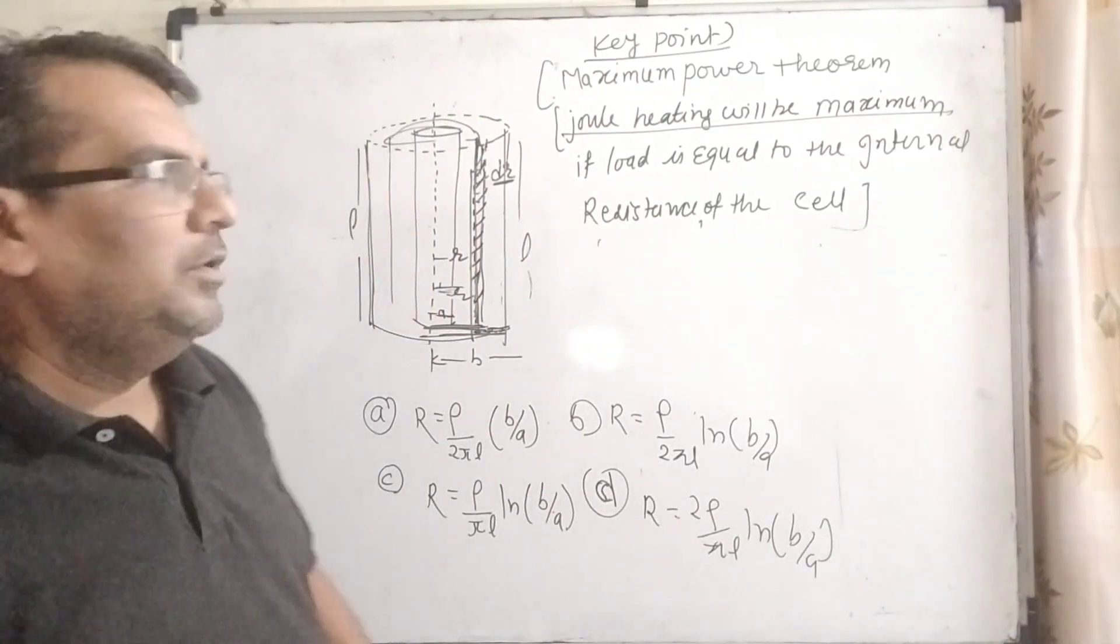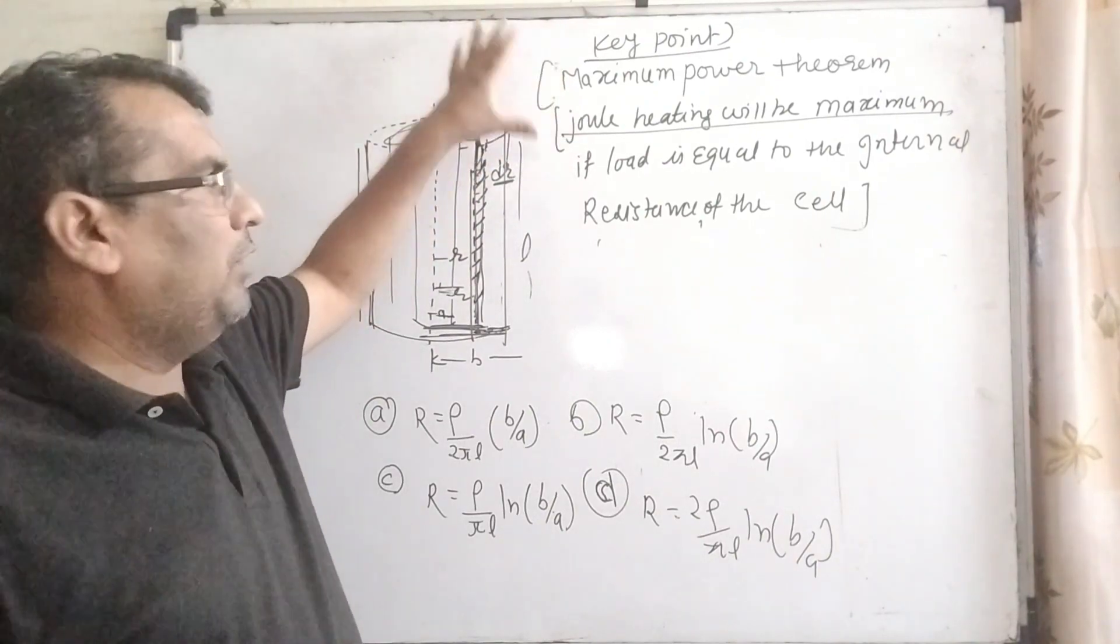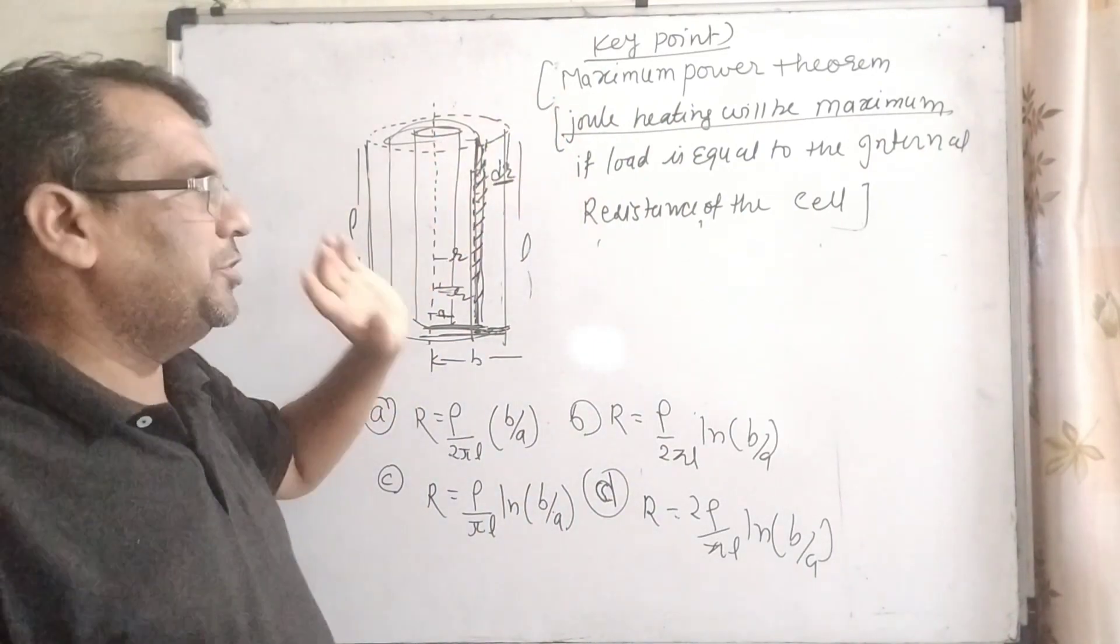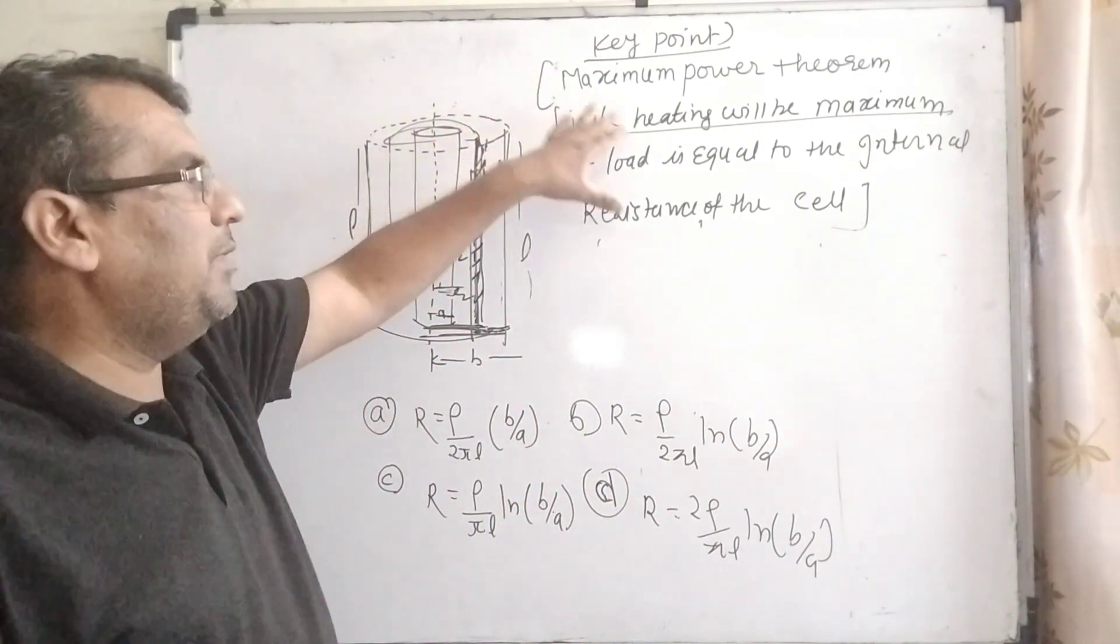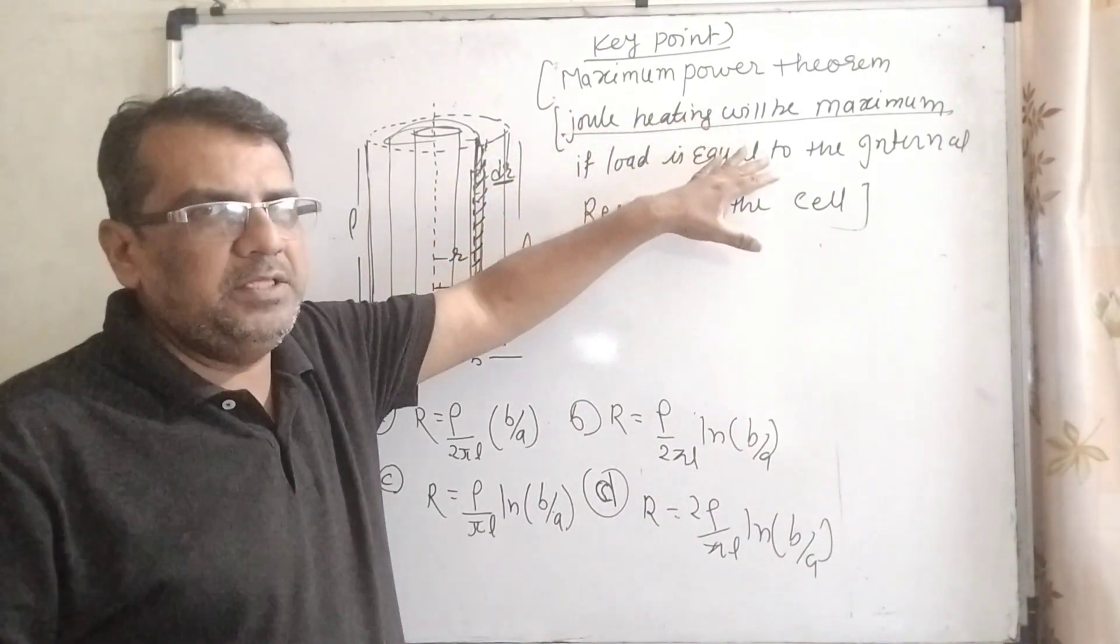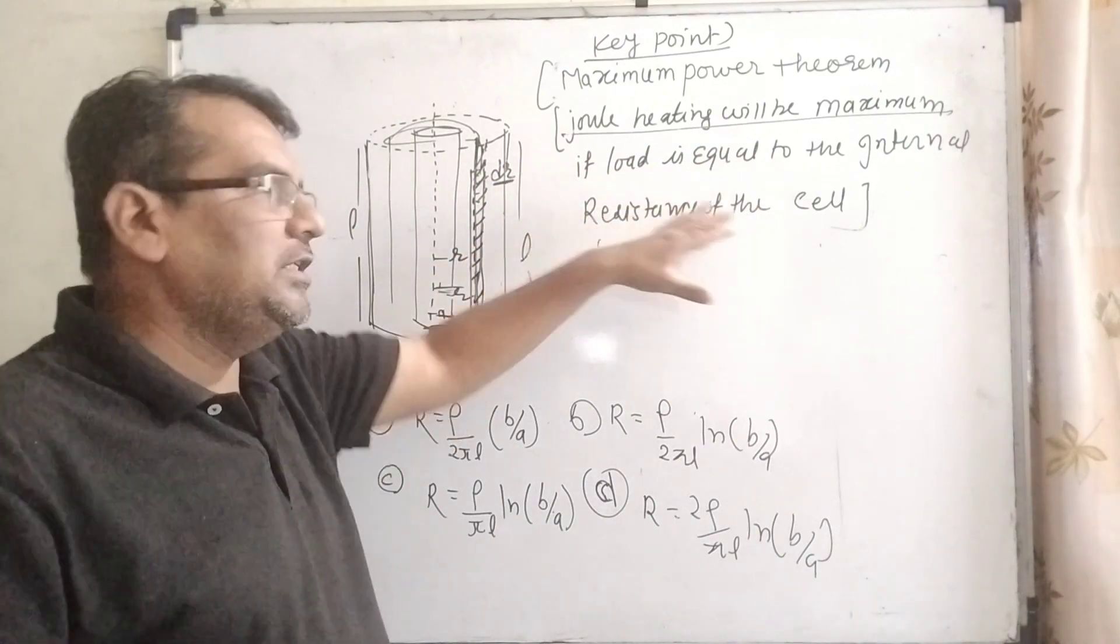To solve this question, we should know the key point. What is the theorem? Maximum power theorem is the key point of this question. And what does this maximum power theorem say? Actually, joule heating will be maximum when load is equal to the internal resistance of the cell.